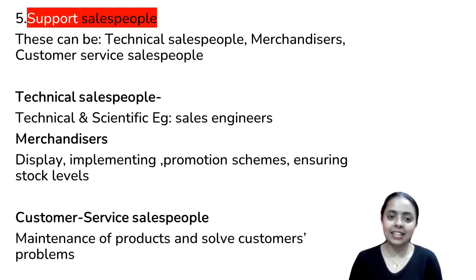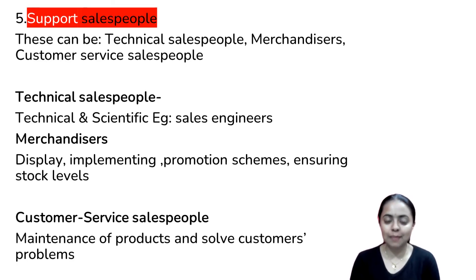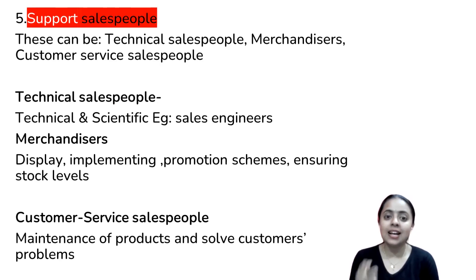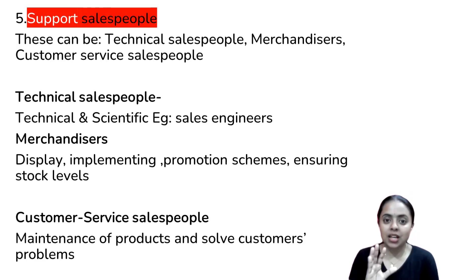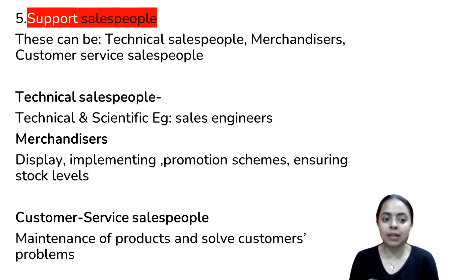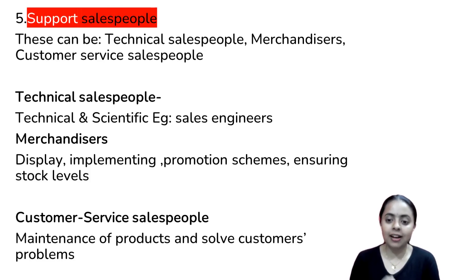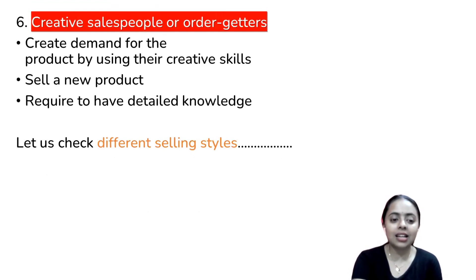Support salespeople are of three types. First, technical salespeople — sales engineers who provide technical assistance. Second, merchandisers — they handle vendor displays, promotion schemes, and stock correction. Third, customer service salespeople — CRM managers who identify customer problems, prioritize them, and solve them.